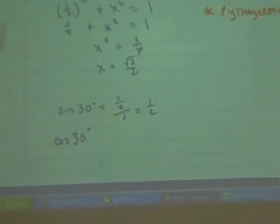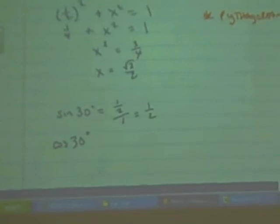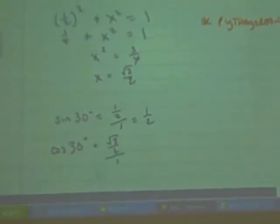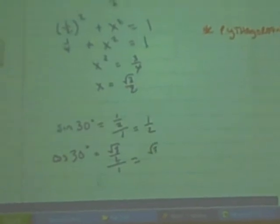Opposite over hypotenuse. That's right. It's one half over one, which is the square root of three over two divided by one. What is that? Square root of three over two.